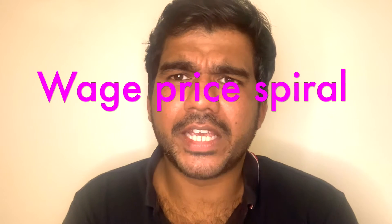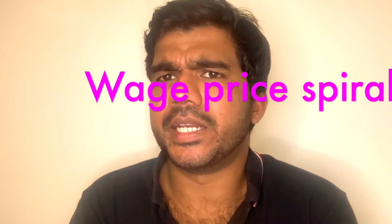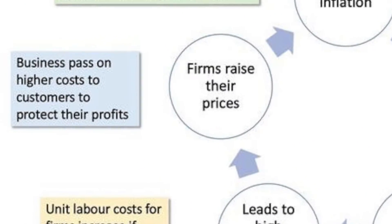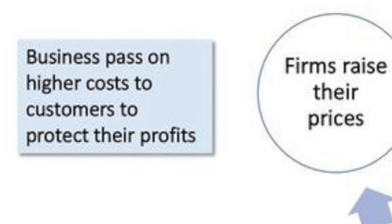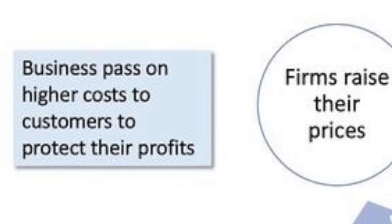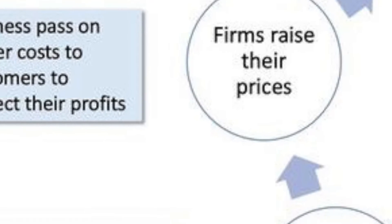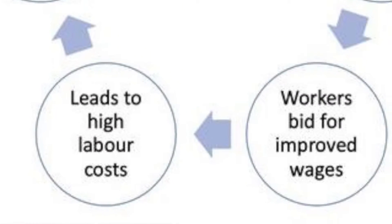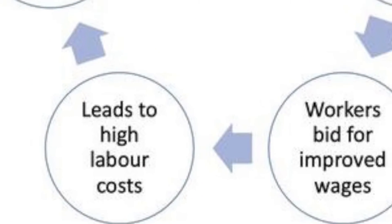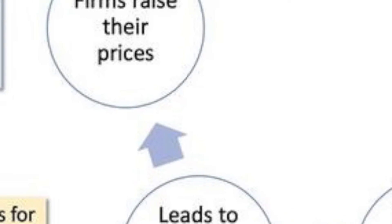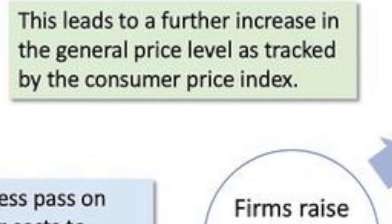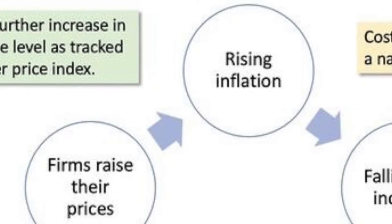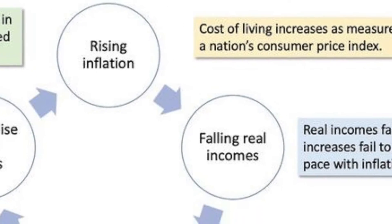What is the wage price spiral? Any goods and services priced in the market depend on their production cost, which includes employee salaries. When employees receive more salary, accordingly the prices of products or services go up, and because of that, inflation will go up.